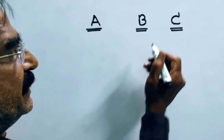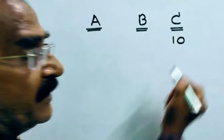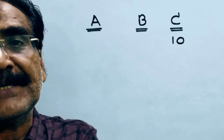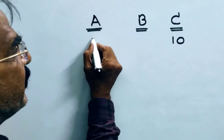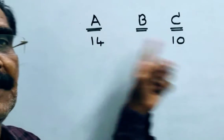That means, if C can do 10 units of work, then A can do 14 units of work, 40% more than C.